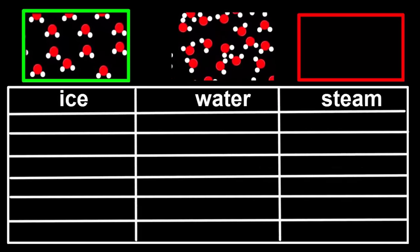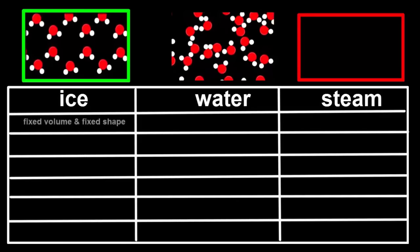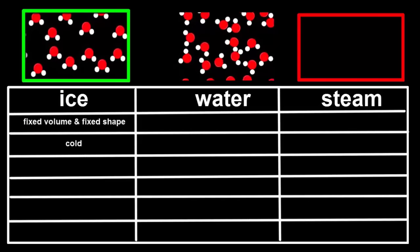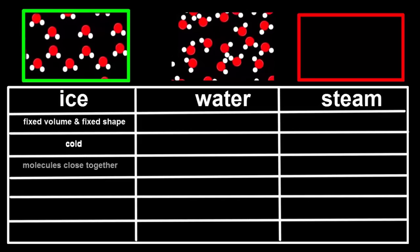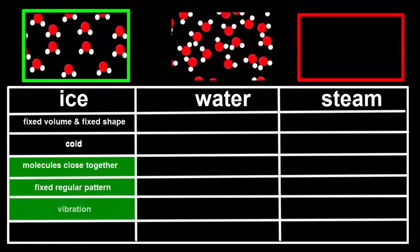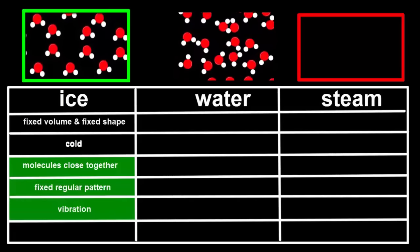So recapping, we can see that solids have both a fixed volume and a fixed shape. If we could see their molecules, they'd be closely packed together in a fixed, regular pattern, and vibrating backwards and forwards relatively slowly.